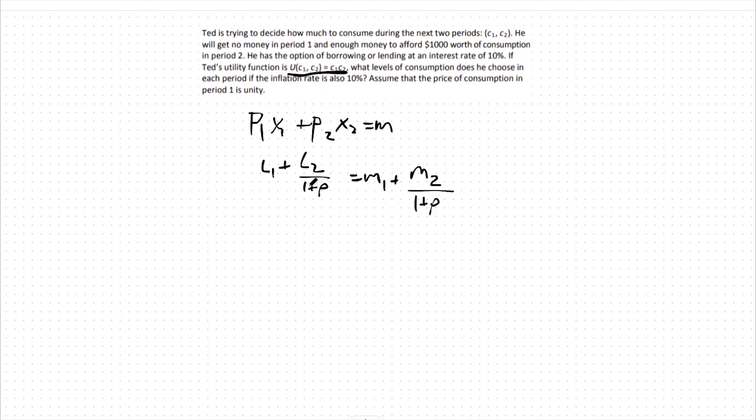What this 1 plus rho equation does is bring consumption tomorrow into today's terms. Rho, then, is our real interest rate.